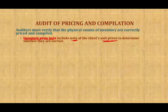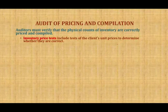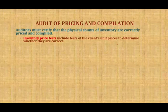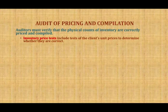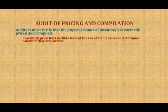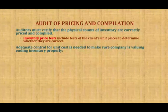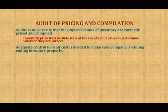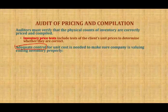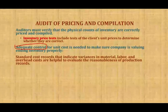You're going to multiply, add, and post — so there are a lot of multiplications, additions, and subtractions going on. That's why we want to make sure it's being done correctly. So what are some adequate internal controls for unit cost to make sure the company is valuing their ending inventory properly? The first thing we want to make sure: does the company have a standard cost record? What is standard cost? Hopefully you remember from your managerial or cost accounting.